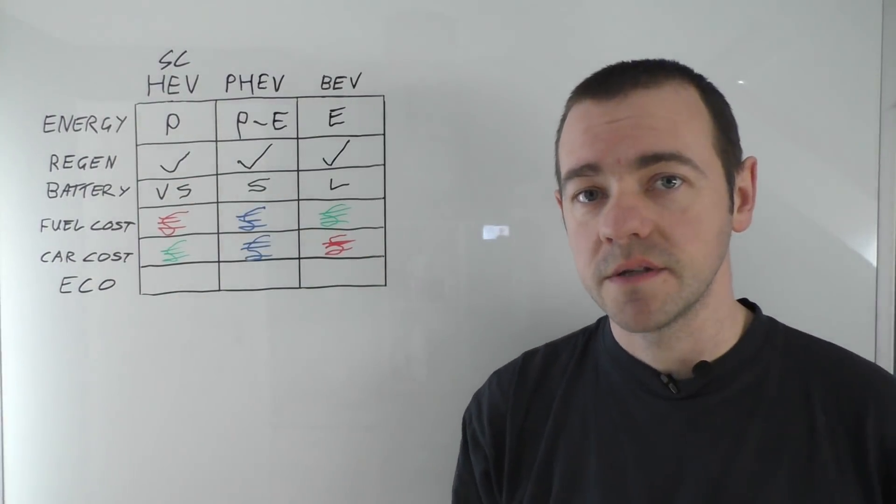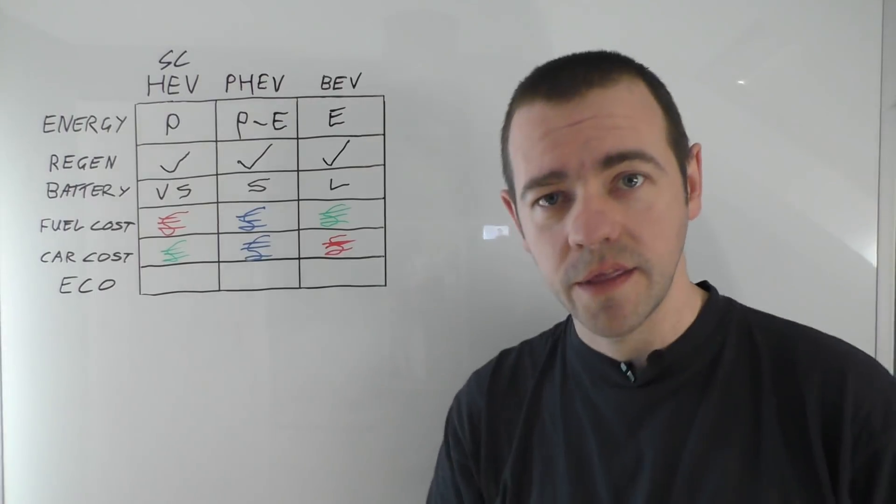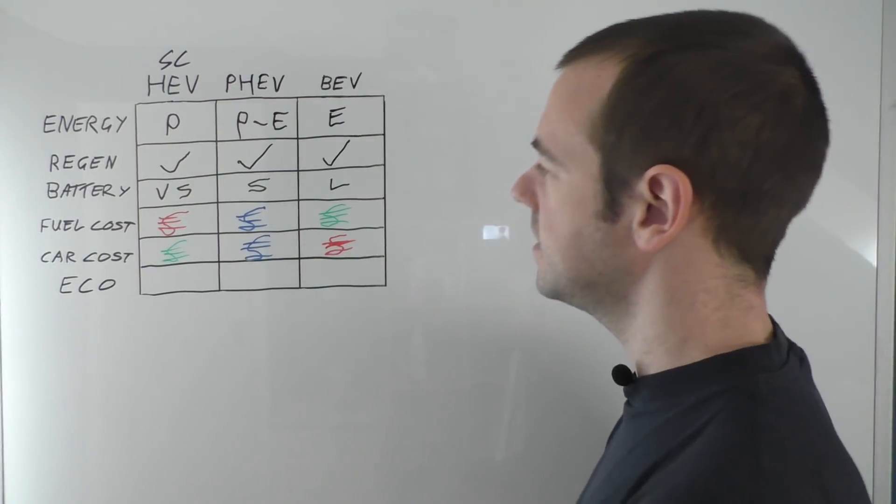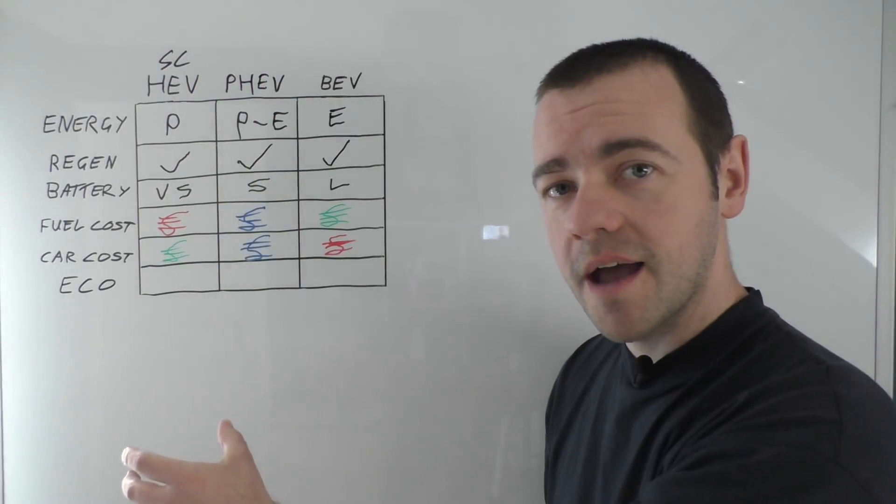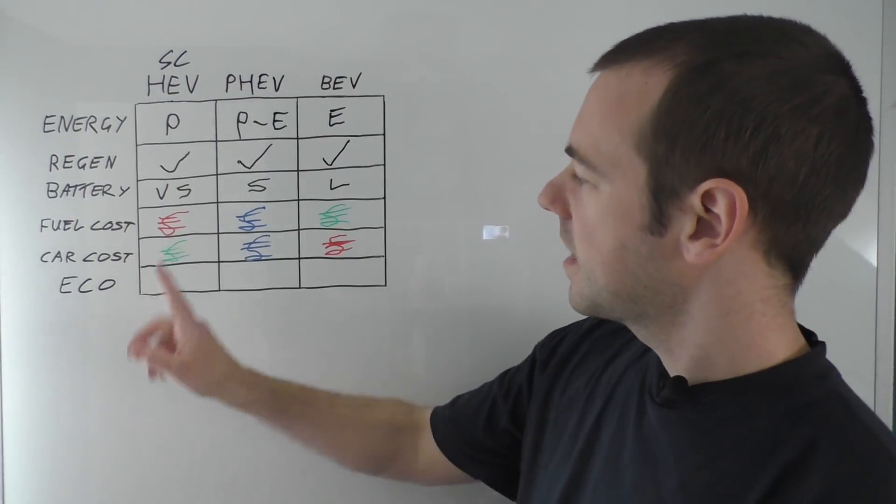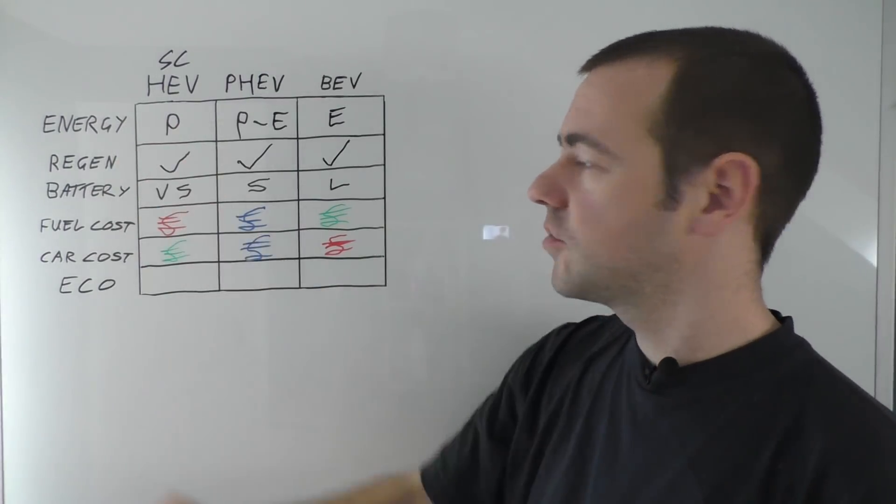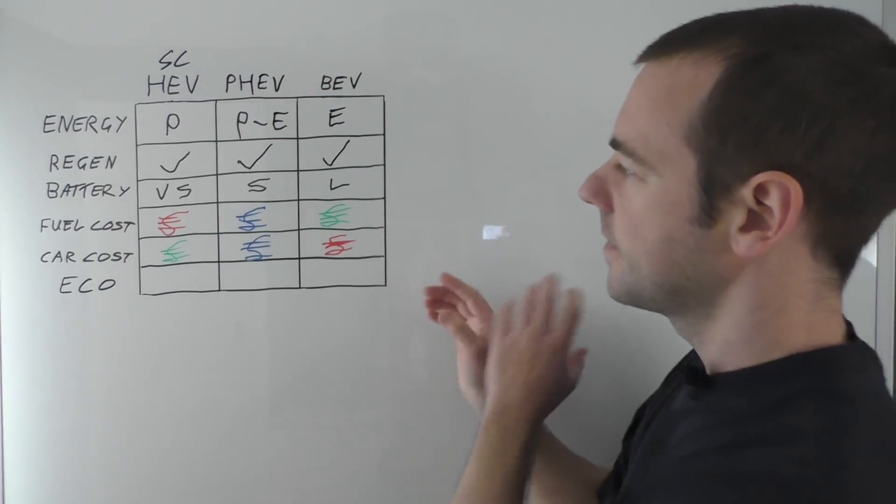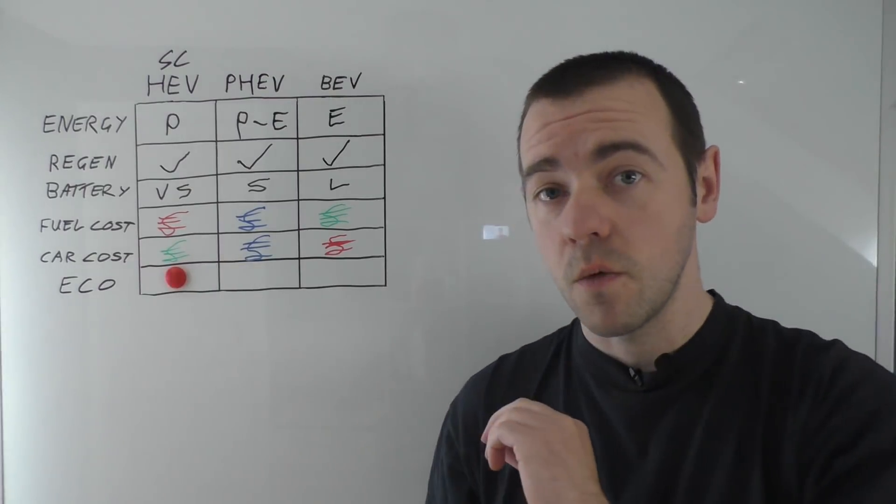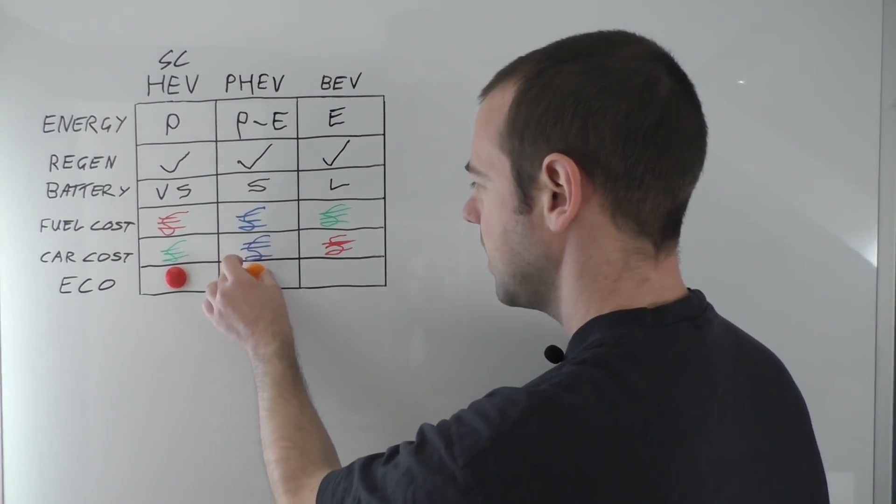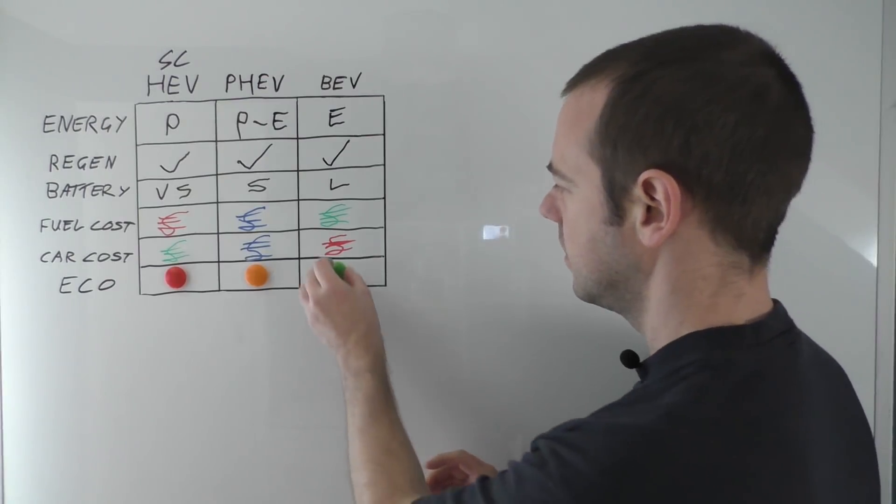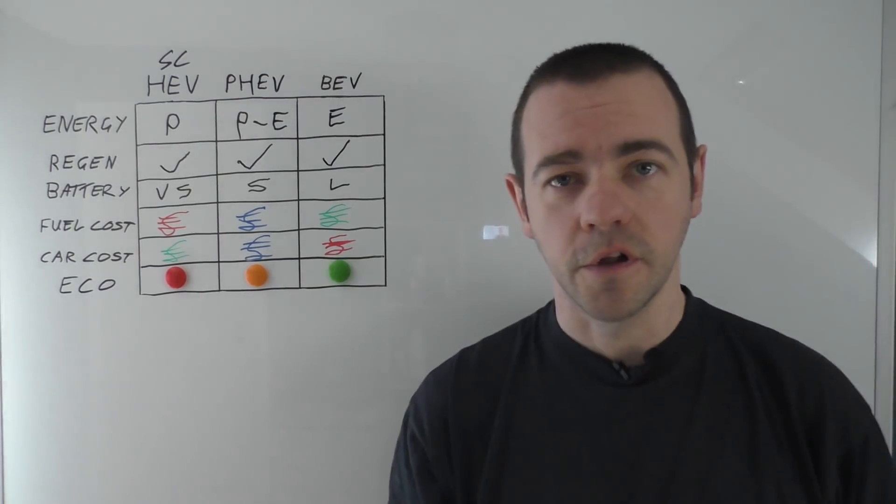Now eco, that basically means how green are these in terms of running them. Clearly they all have an impact on the environment, but generally speaking when you factor in the manufacturing of the cars and their lifespan, so let's imagine a car lasts 15 years, the manufacturing of that plus 15 years of running it on petrol equals X and so forth and so forth. So compared to each other in eco terms, that would be red, that would be the worst in terms of environmental impact. The plug-in hybrid electric vehicle on average would be again somewhere in the middle.